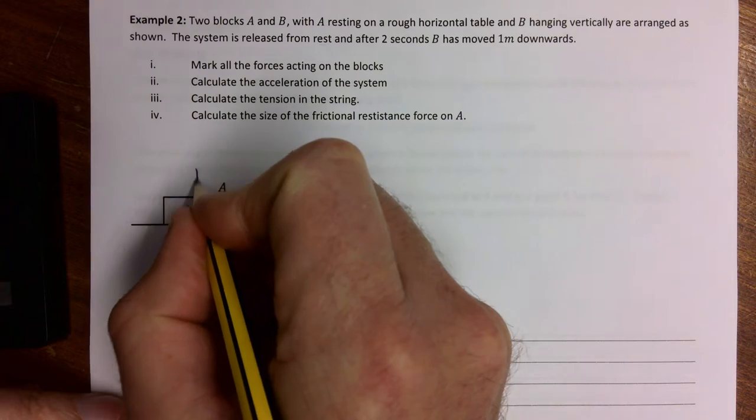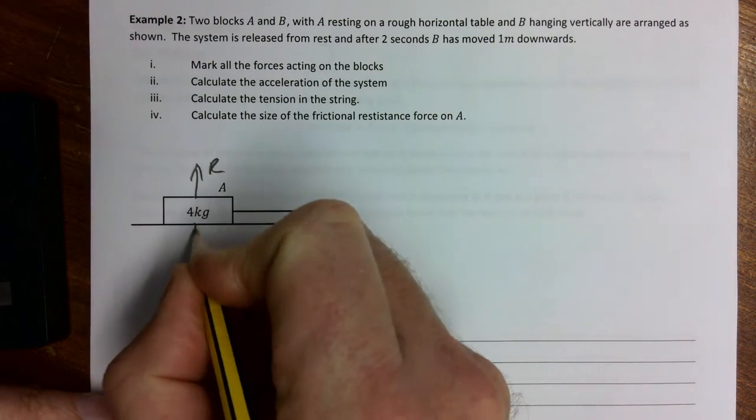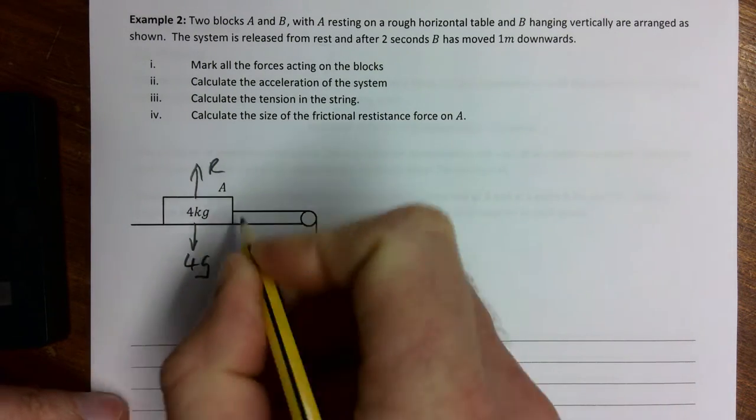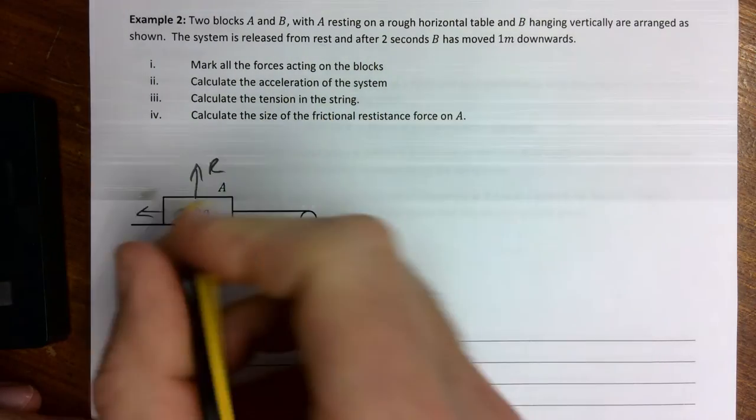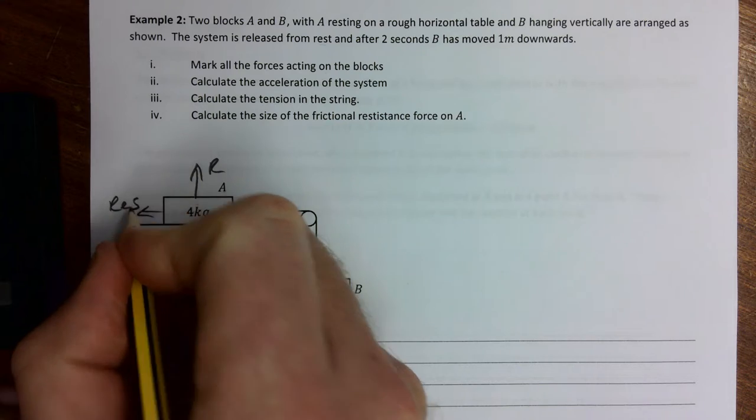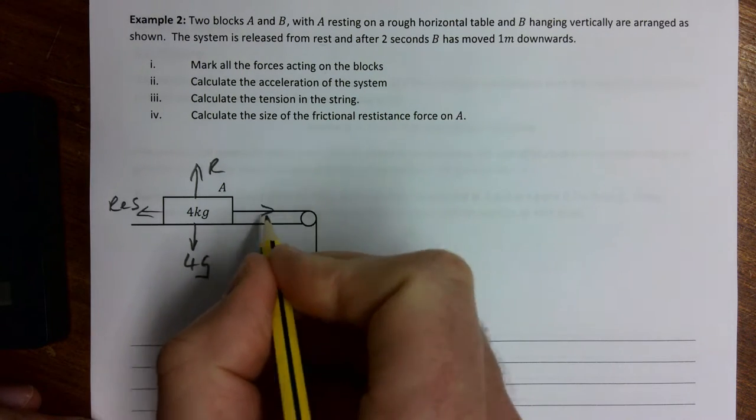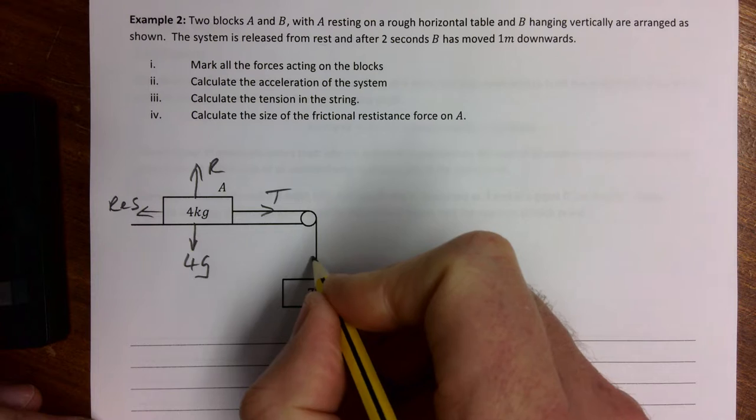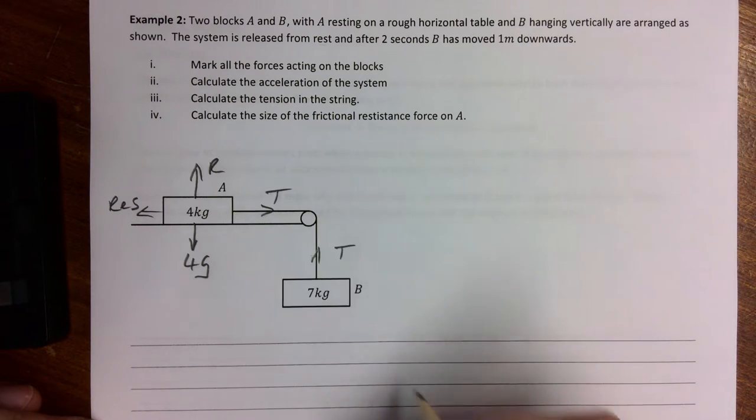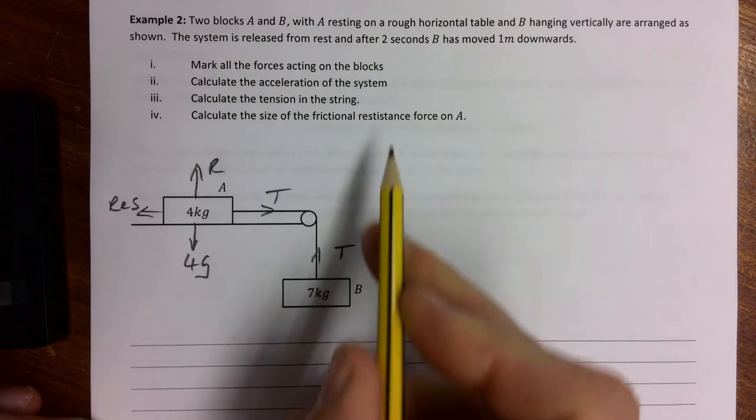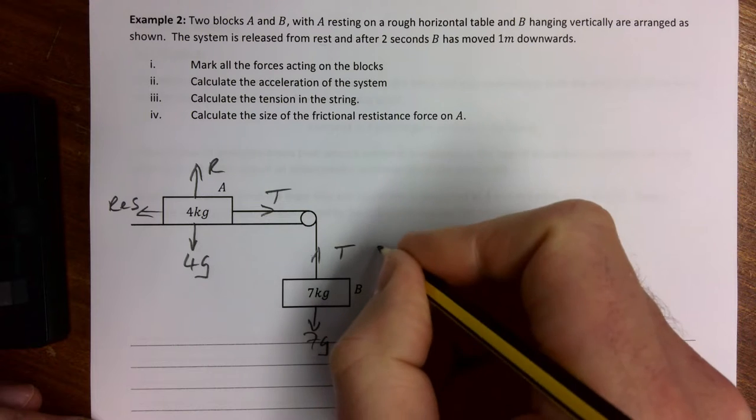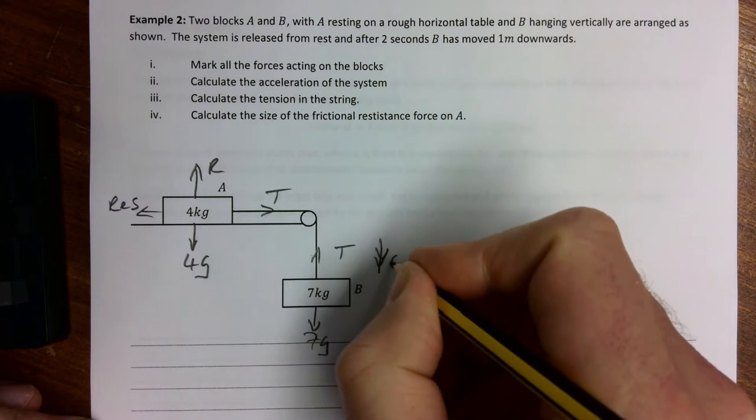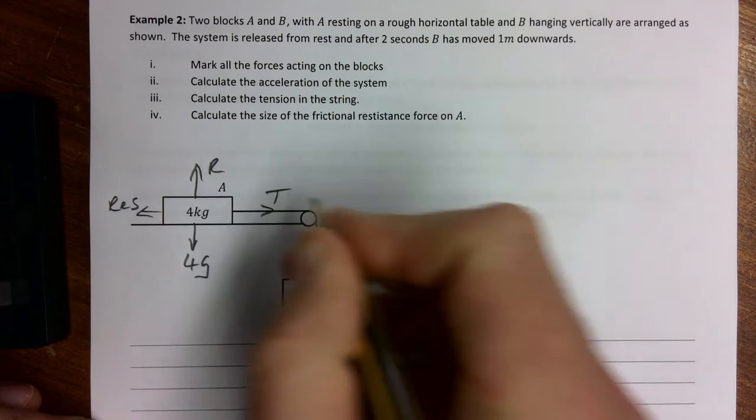Mark all the forces acting on the blocks. Let's start with that. This one here is going to have a normal reaction going up and then a 4g acting down. Going this way here there's some sort of resistance because there's friction, so we're going to have resistance going that way. Pulling it this way there'll be tension coming out of the 7g one. We're asked for the forces acting on the blocks, so we don't need to put in the two tensions acting on the pulley. 7g and then it's always good to see our acceleration, so that's a meters per second squared.